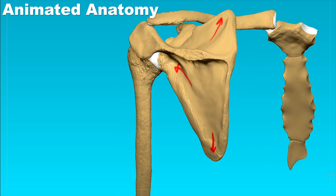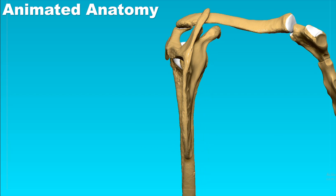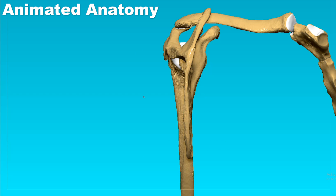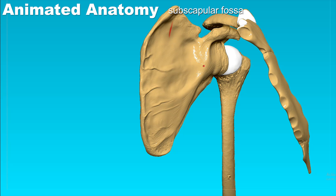If we rotate around, we will see that it's somewhat curved, so it also looks like a fossa — and that is the subscapular fossa, where the muscle subscapularis originates. We will see these muscles shortly right after we explain the bone.